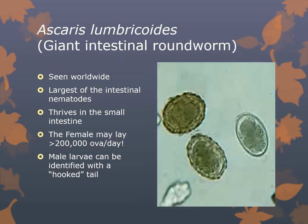The next roundworm is Ascaris lumbricoides, also known as the giant intestinal roundworm. This is the second most common gastrointestinal helminth in the United States, with approximately one billion people infected worldwide at any given time. They can be up to 35 centimeters — about a foot — in length and resemble an earthworm. They are the largest intestinal nematode and thrive in the lumen of the small intestine. The female may lay up to 200,000 ova a day. The male larva can be identified by its smaller size and hooked tail. These are very active migrators and get agitated when treated with drugs. Symptoms include fever, cough, GI or respiratory blockages, and increased eosinophils.